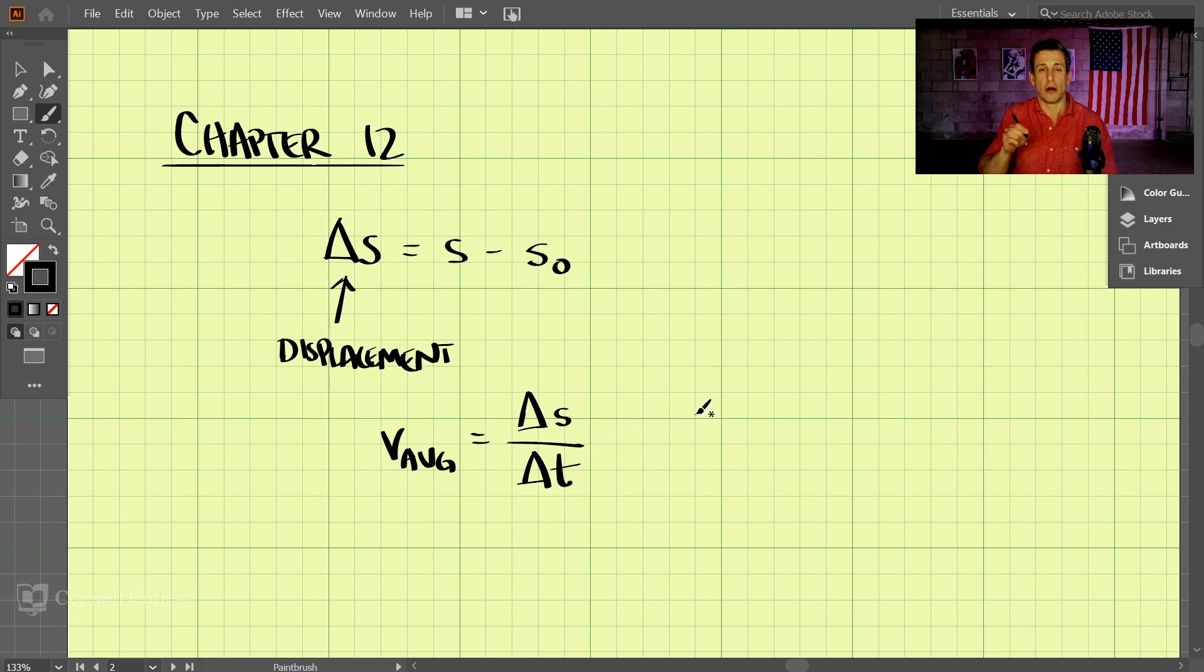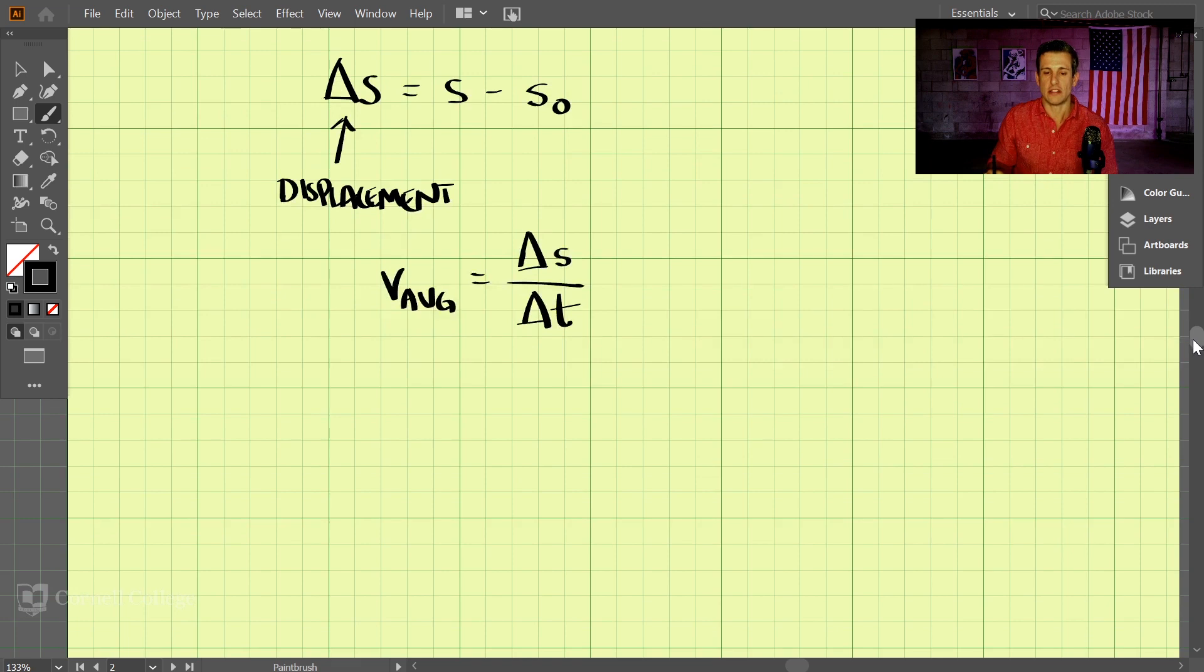And we need to usually talk about the instantaneous velocity or the current velocity, like what your speedometer shows on your car. So the instantaneous velocity here, we usually need to take a small bit of the displacement and a small bit of the time, a very small bit. So the instantaneous velocity is the derivative of the position with respect to time, ds/dt.